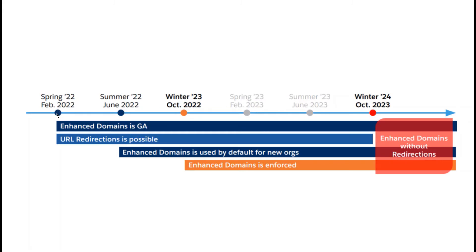This is a timeline starting from 2022. Enhanced domains are generally available. URL redirection is possible until a certain point. In Winter '24, enhanced domains are used by default by orgs. Enhanced domains without redirection will be enforced — all old domain names will not be used, and only new domain URLs will be used by Salesforce. This is a very important timeline, so plan accordingly to fix issues in your orgs.